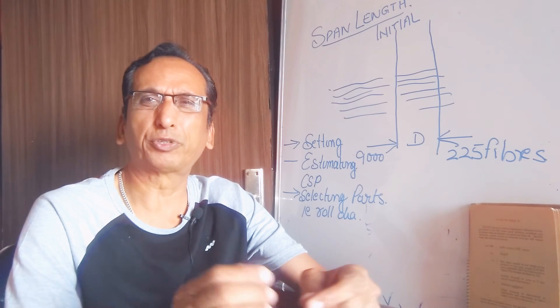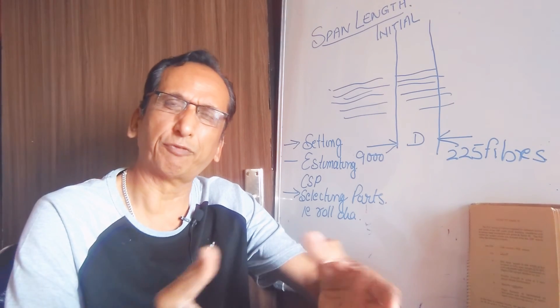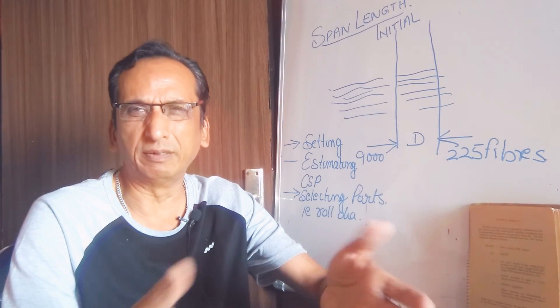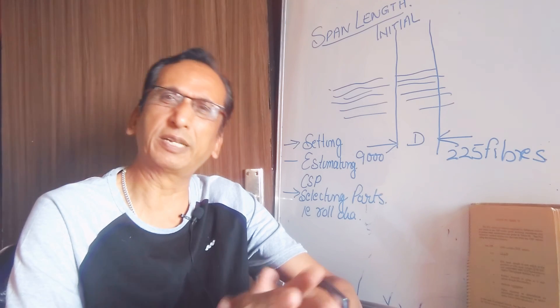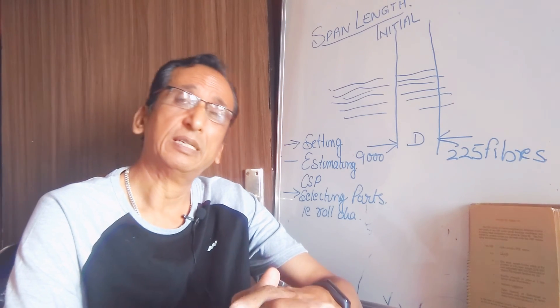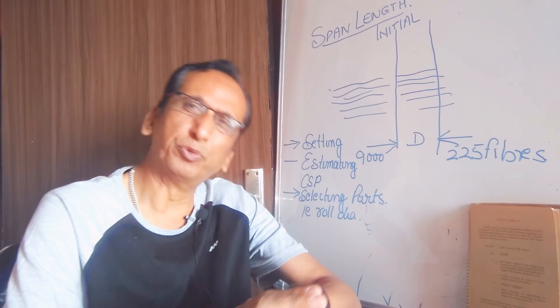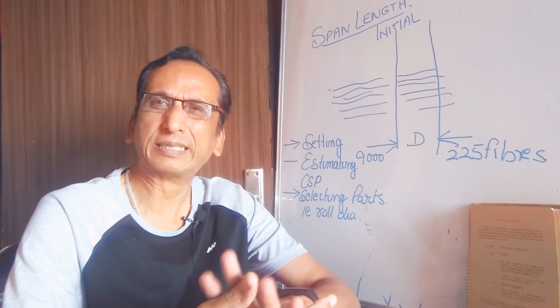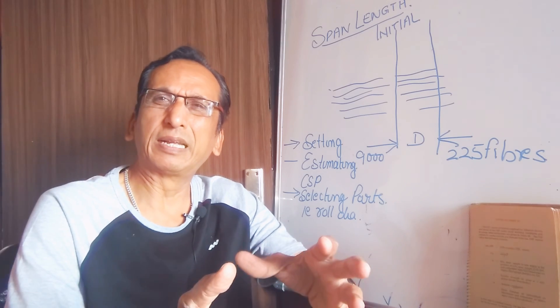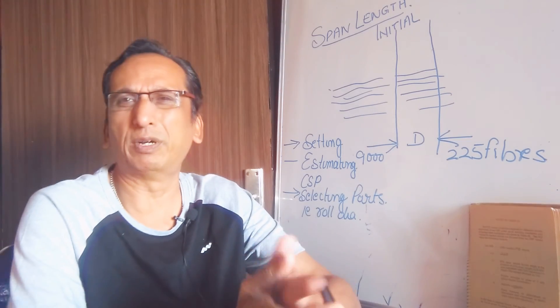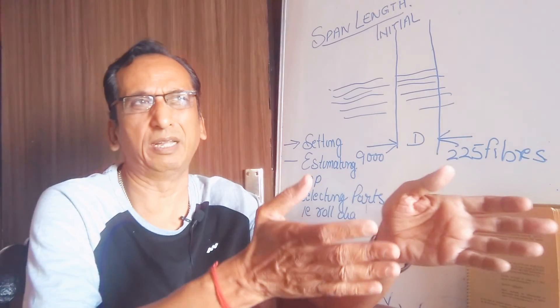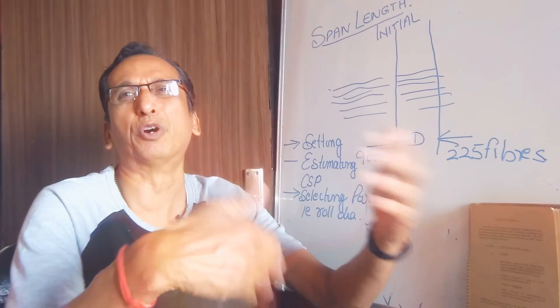it was used for 2.5% span length or 50%, then spinning consistency index, strength, maturity and fineness. So these two instruments, they cannot be used for the same purpose because in spin lab we are getting more properties.